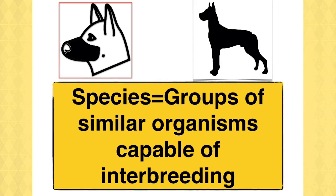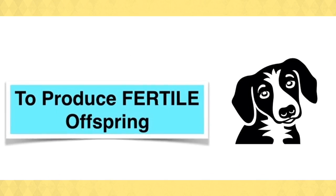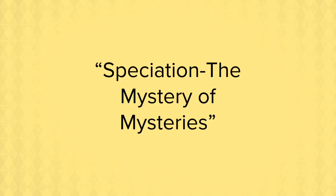A species is when you have a group of similar organisms and they're capable of interbreeding to produce fertile offspring. Darwin said speciation is the mystery of mysteries. How did these new species of finch form?